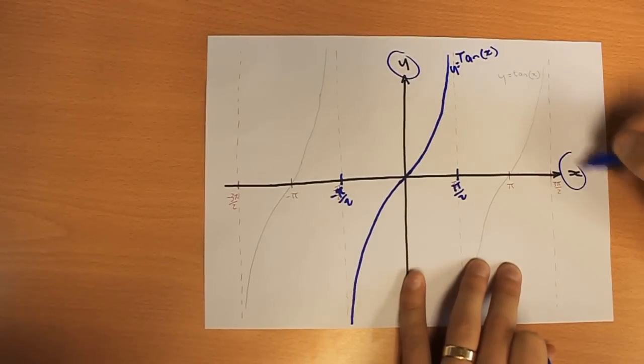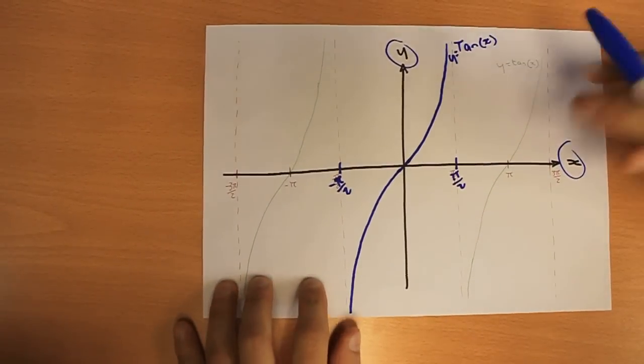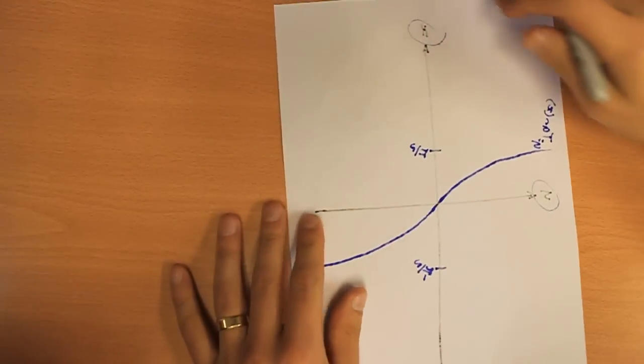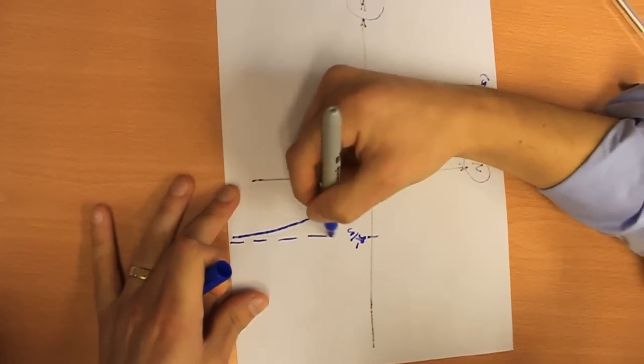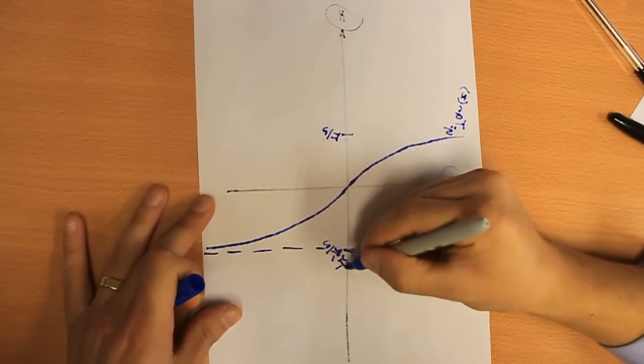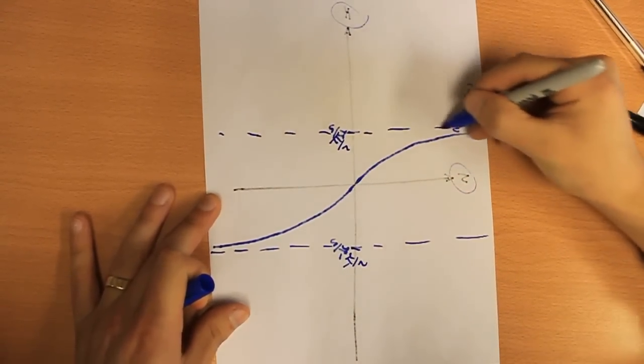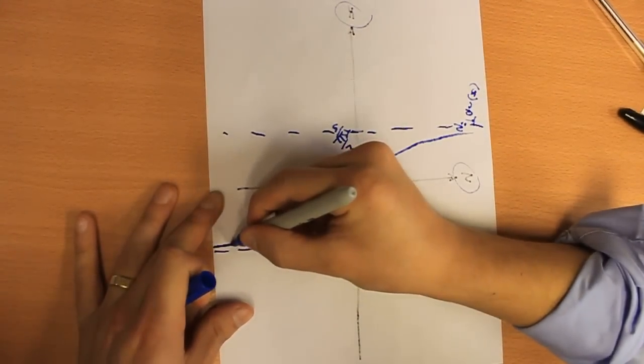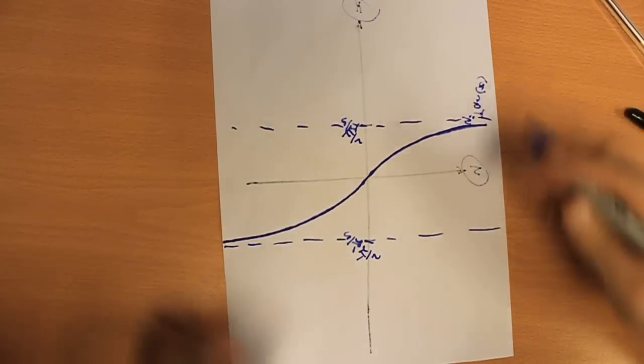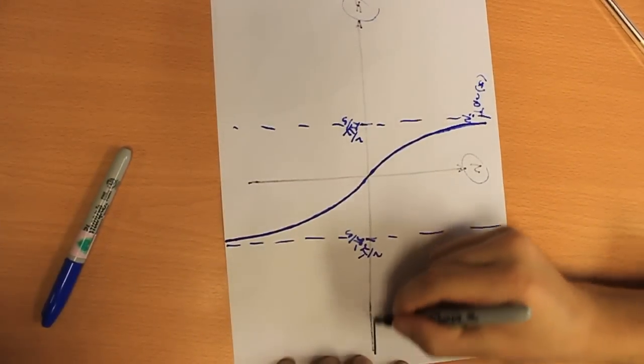We want the inverse of tan x, so we want to swap y and x effectively, as our trick says. So we swap y and x by flipping x onto y, y onto x like so. And you can see now your asymptotes have gone horizontal between minus pi over 2 and pi over 2.